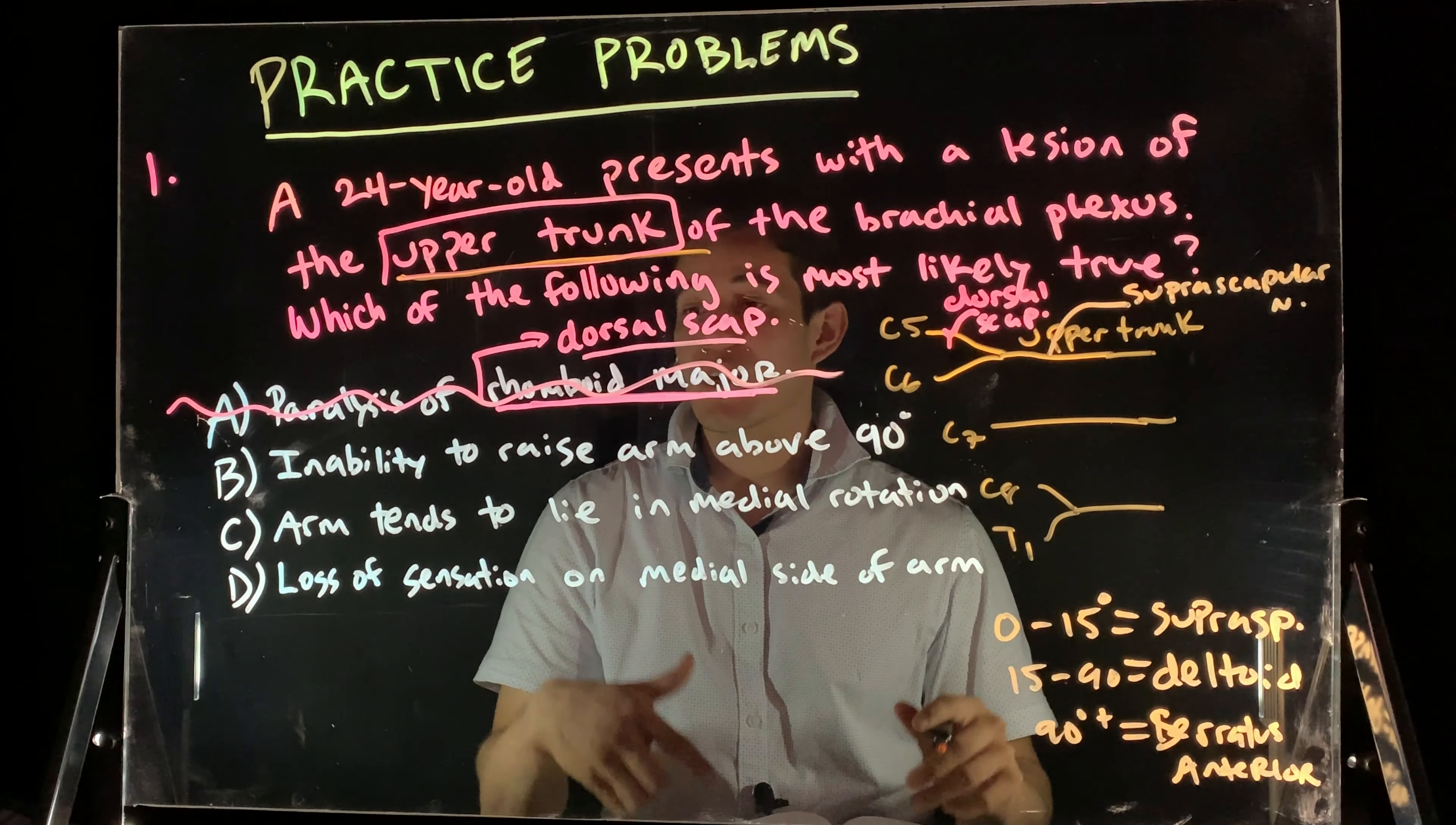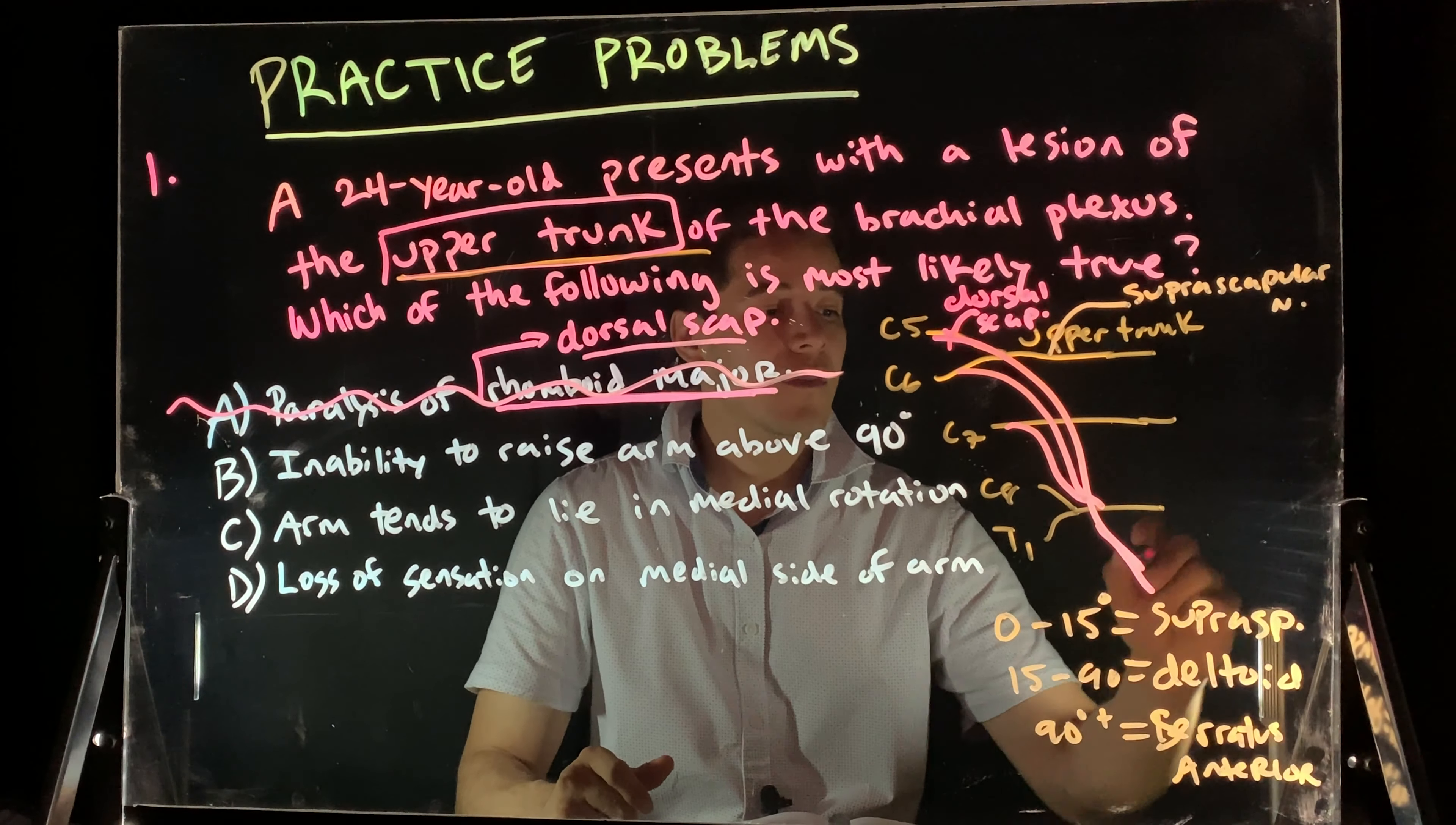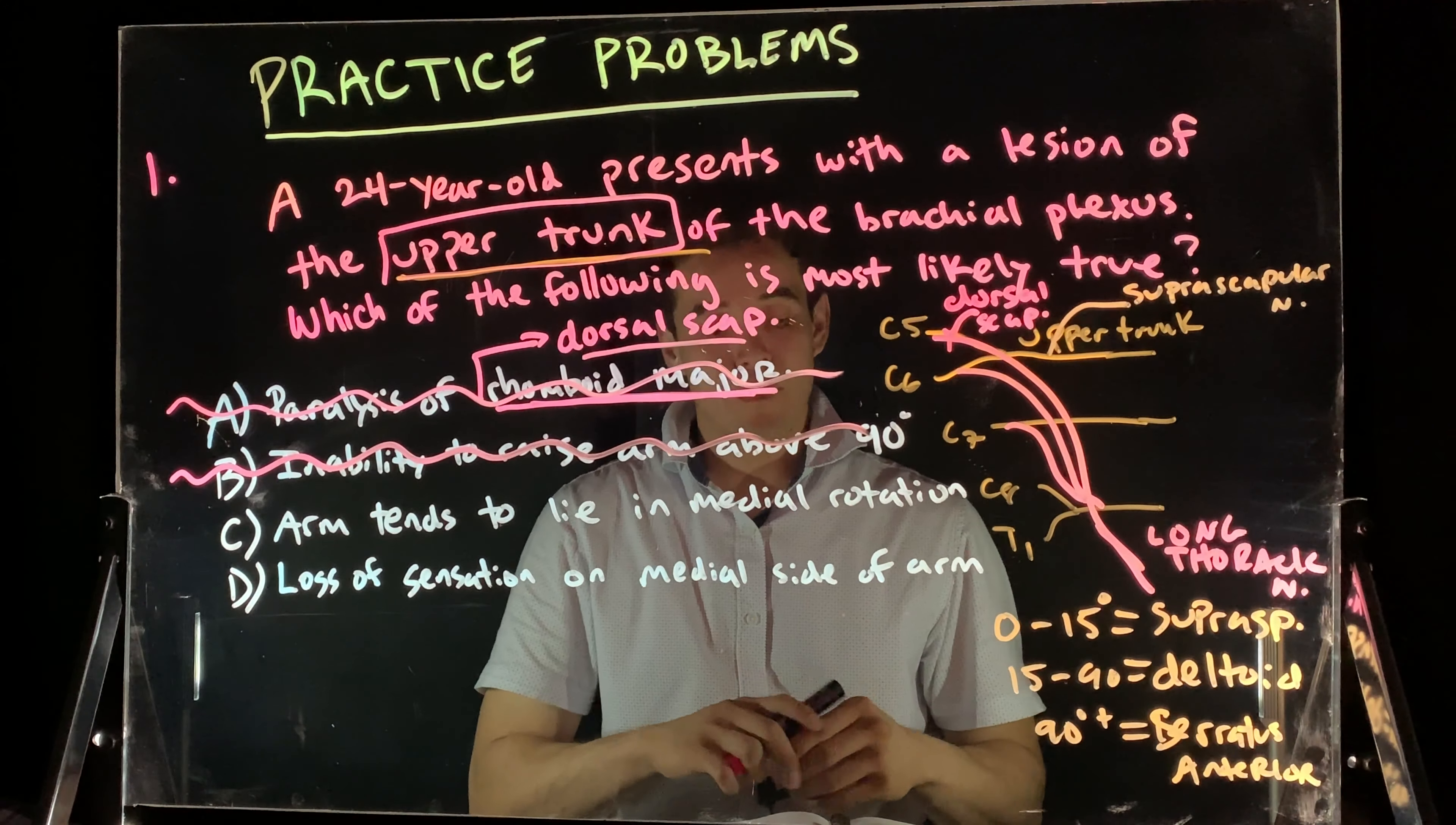So, we've got our serratus anterior that goes 90 degrees and up, right? But we know our serratus anterior is innervated by the long thoracic nerve, which is a combination of C5, C6, and C7, forming my long thoracic nerve. So, it's not going to be our long thoracic nerve that's affected, so it can't be this B.